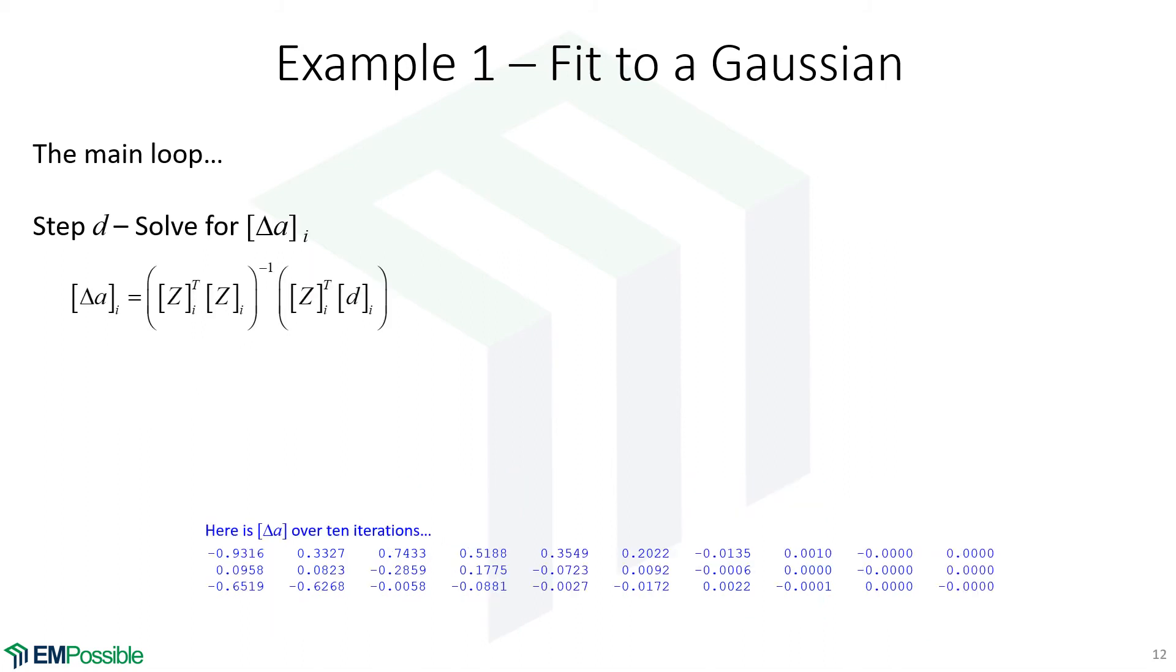Once we have the Z built and we've already calculated our D, we can use least squares and calculate delta A. This is by how much we should be changing our parameters. So here's by how much we need to change it after the first iteration, and we can see that through 10 iterations. We can definitely see that the change in these parameters are getting smaller and smaller and smaller. And it's from these that will be our convergence criteria. When the change in those parameters falls below some threshold, we are done.